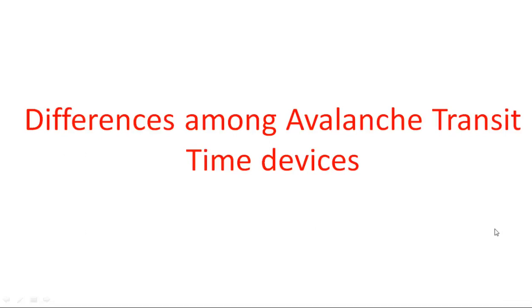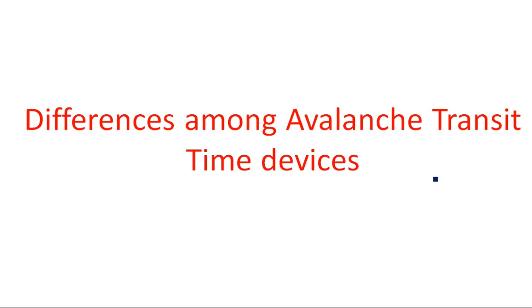Hi everyone, in this video I am going to explain the differences among different types of avalanche transit time devices: TRAPATT, IMPATT, and something like BARITT or Gunn diode. In the last class I already explained what avalanche transit time devices are and the different types of components following this avalanche transit time device. I have also explained the devices IMPATT, TRAPATT, and BARITT one by one.